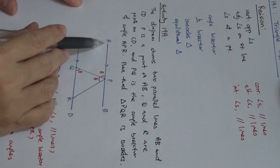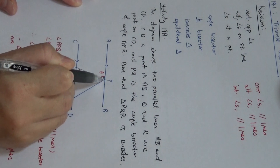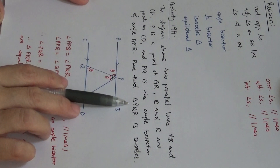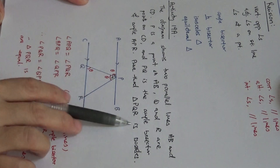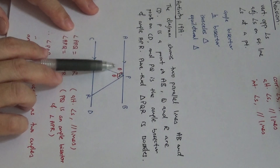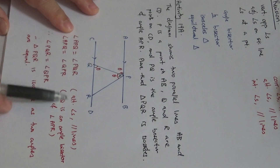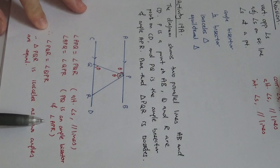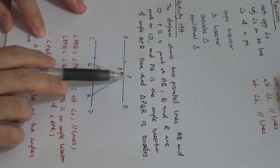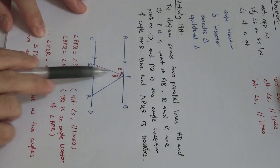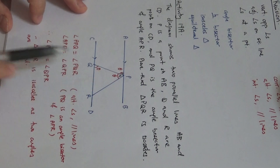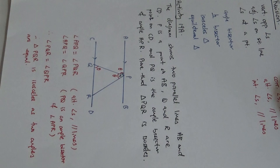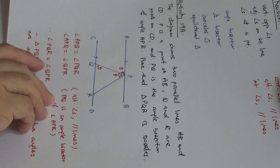Since PQ is an Angle Bisector of APR, this angle must be equal to this angle — divided into two equal halves, so I'll let each of them be theta. The question says to prove that triangle PQR is isosceles. Angle APQ equals angle PQR — these are alternate angles, parallel lines. And these two angles are equal because PQ is an Angle Bisector. So Angle PQR equals Angle QPR. Because we have two angles equal, triangle PQR is isosceles as two angles are equal.